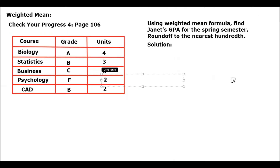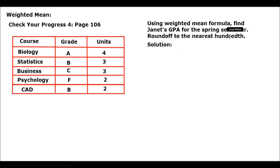Good day everyone. We have here a topic on weighted mean for your Mathematics in the Modern World subject. This is a 'Check Your Progress' exercise on page 106. The question is: using the weighted mean formula, find Janet's GPA for the spring semester, rounded off to the nearest hundredth.